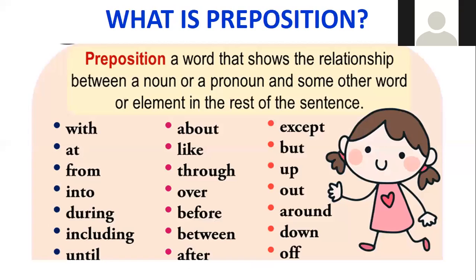What is a preposition? A preposition is a word that shows the relationship between a noun or a pronoun and some other word or element in the rest of the sentence. As I said before, in the platform, we are going to focus only in six prepositions, but we have here more. For example, we have with, we have at, we have from, we have into, we have during, we have including, we have until, about, like, through, over, before, between, after, except, but, up, out, around, down, off. All of them are prepositions.